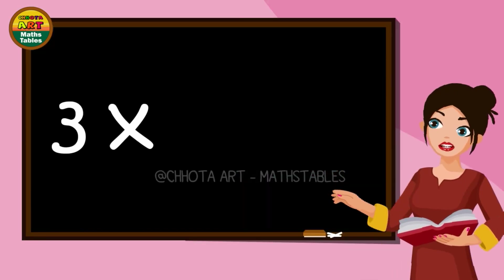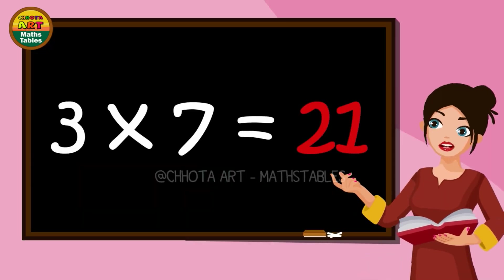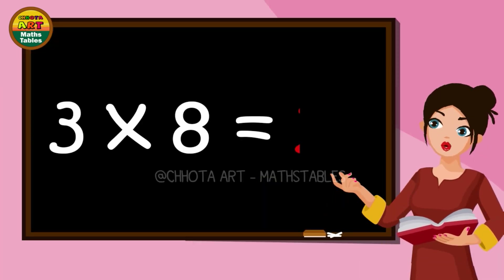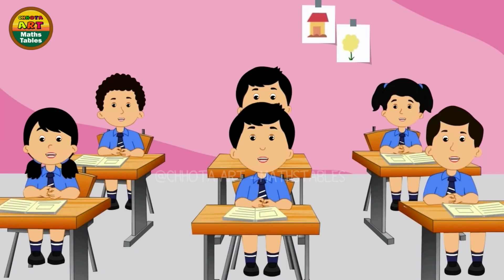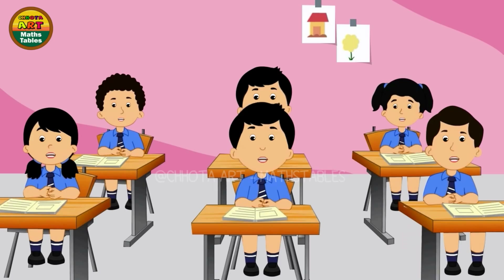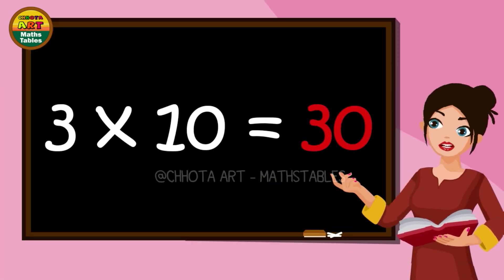Three sixes are eighteen. Three sevens are twenty-one. Three eights are twenty-four. Three nines are twenty-seven. Three tens are thirty.